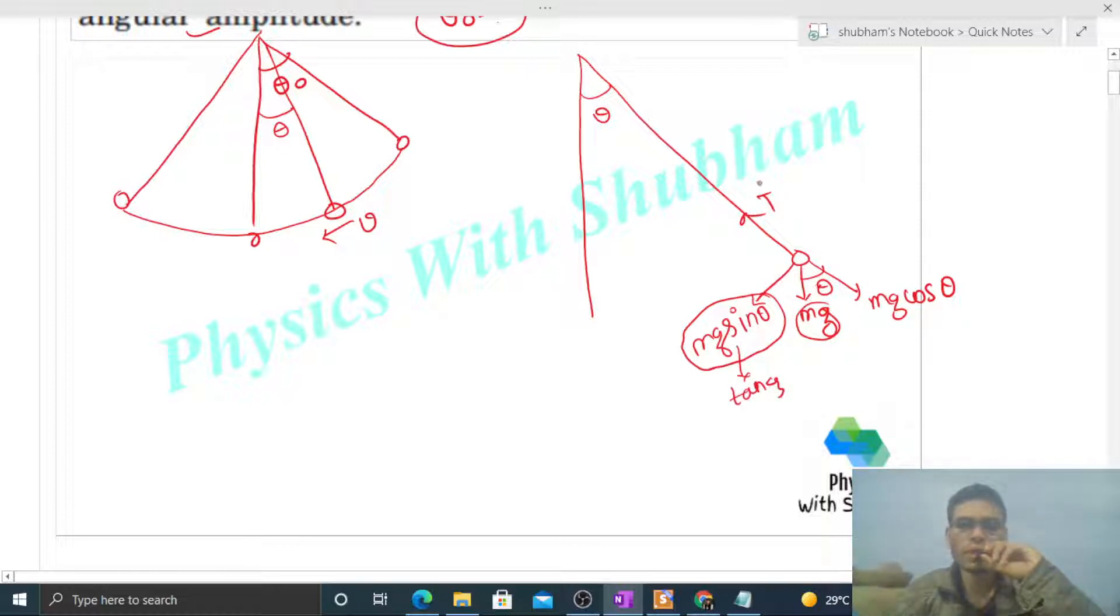The net force in radial direction is tension minus mg cos theta, net force in radial direction towards the center. That will be your centripetal force, which is m into v square divided by L. You can see this pendulum is moving in a circular path.